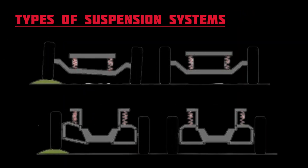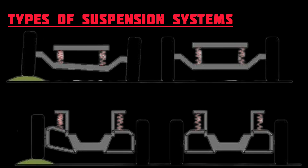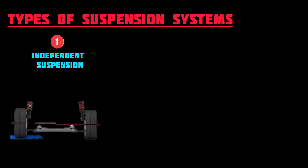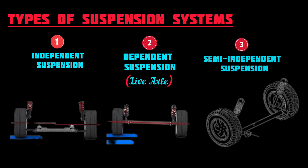Types of suspension systems: one, independent suspension; two, dependent suspension — live axle; three, semi-independent suspension.